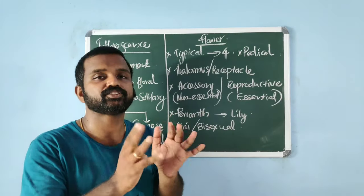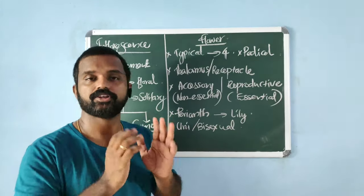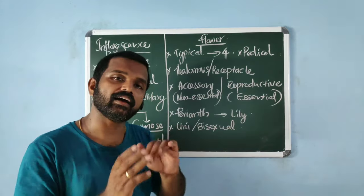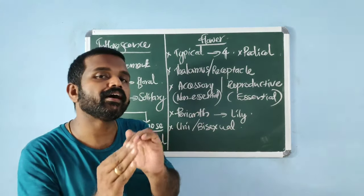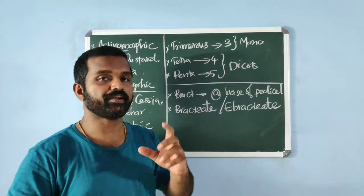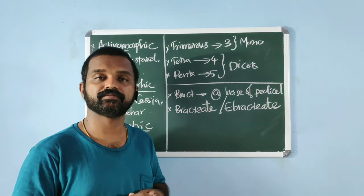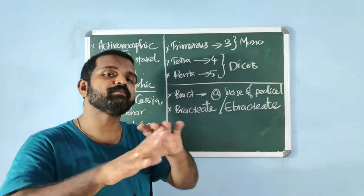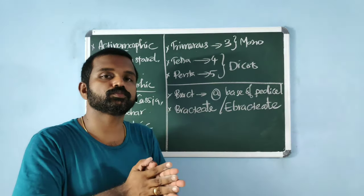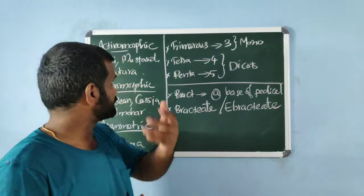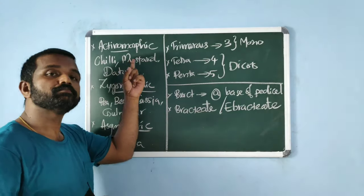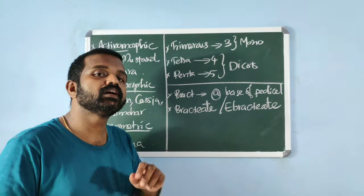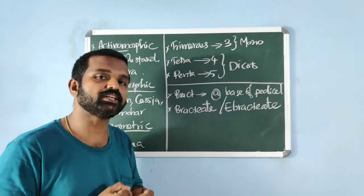In some flowers like lily, calyx and corolla are not differentiated — undifferentiated calyx and corolla is known as perianth. Unisexual means having only one sex organ — either androecium or gynoecium. Bisexual means having both androecium and gynoecium. Actinomorphic symmetry is radial symmetry — the flower can be divided into two equal halves by any plane. Examples: chili, mustard.